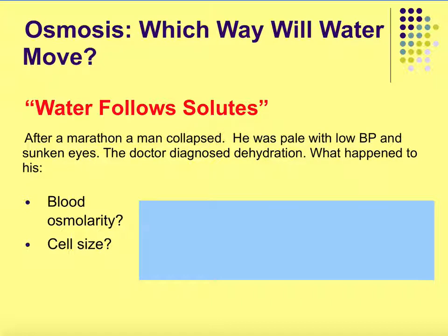After a man ran a marathon, he collapsed. He was pale, had low blood pressure, and had sunken eyes. The doctor diagnosed him with dehydration. So if he's dehydrated, what would that do to his blood osmolarity? If he's dehydrated, that means he has less water and more solutes, so blood osmolarity would increase.